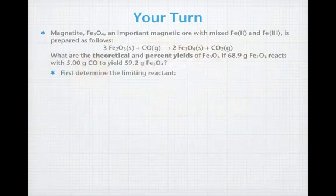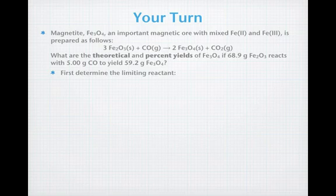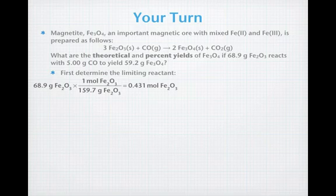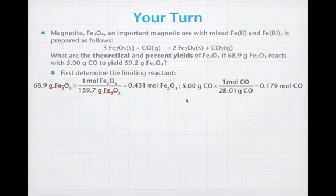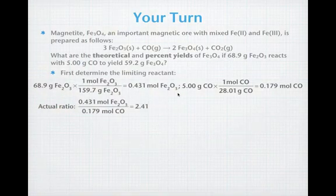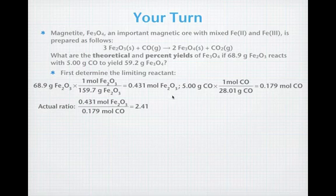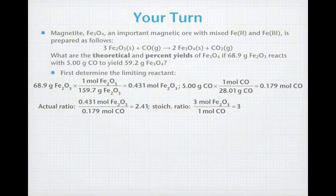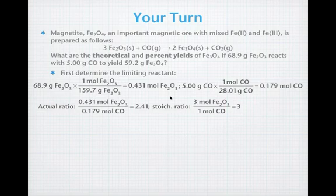All right. So, you're back. The first thing we need to do is determine the limiting reactant. So let's plug everything in as we've done before. 68.9 grams of Fe2O3. The molar mass of Fe2O3 cancels out, and we get 0.431 moles of Fe2O3. Let's do the same thing with the carbon monoxide. We have 5 grams of carbon monoxide. Its molar mass cancels out, and we get 0.179 moles of carbon monoxide. Let's plug those into our ratios. Our first ratio, we have 0.431 moles of Fe2O3 over 0.179 moles of carbon monoxide is a ratio of 2.41. The actual stoichiometric ratio is 3 to 1. So, because the Fe2O3 is too low, the numerator is too low, that means Fe2O3 is limiting.